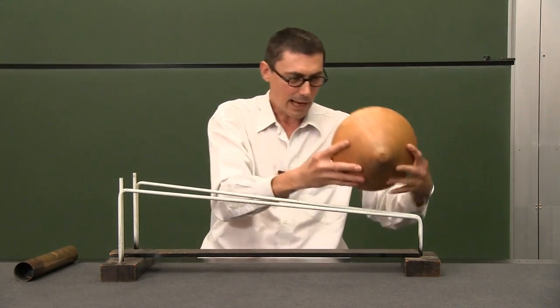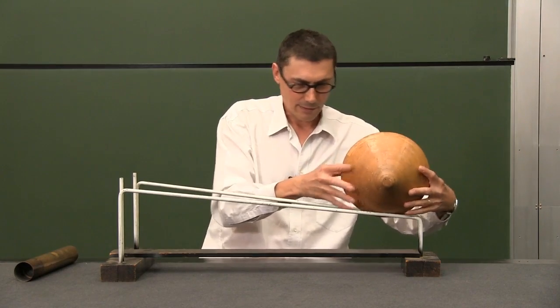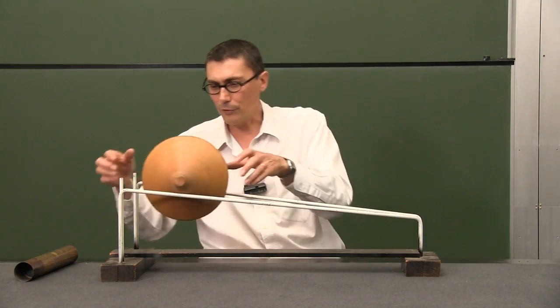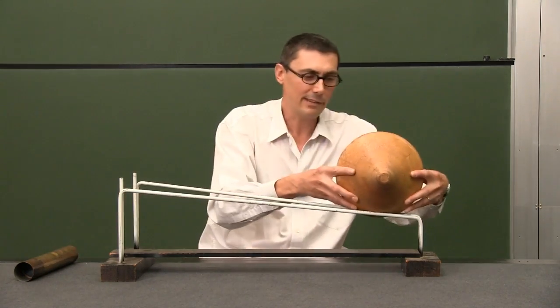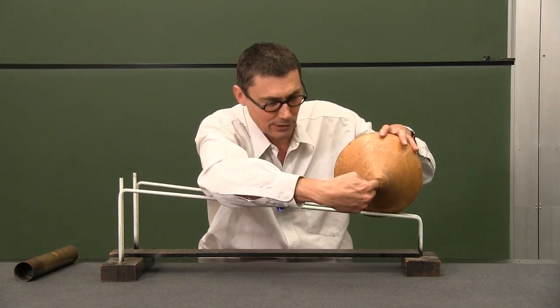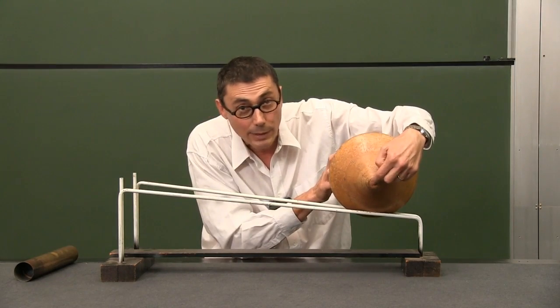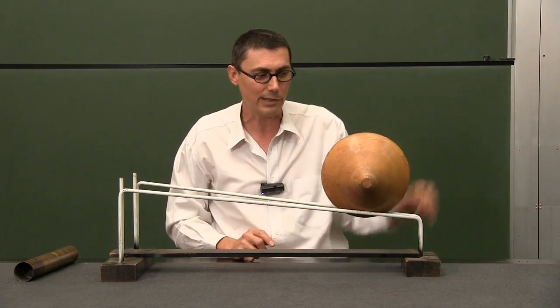So instead of looking at the rails or looking at where the object touches the rails, I want you to concentrate on the centre of mass. So focus on this point here, which lies on a line that goes through the centre of mass. Look at what that point's doing and then now it'll make a bit more sense what's going on.